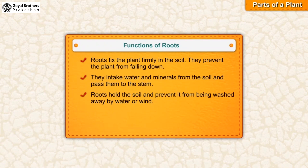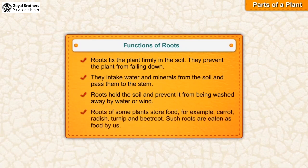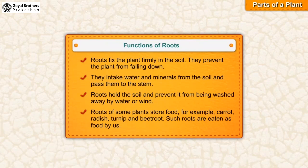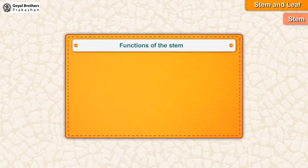Roots of some plants store food — for example, carrot, radish, turnip, and beetroot. Such roots are eaten as food by us. Functions of the stem: the stem holds the plant upright.